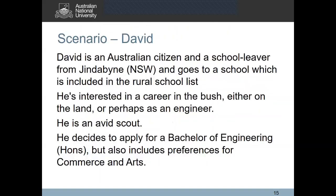Let's try and put all of this information into context by looking at a scenario of a prospective ANU student named David. David is an Australian citizen and a school leaver from Jindabyne, and goes to a school which is included in the rural schools list. He's interested in a career in the bush, either on land or perhaps as an engineer. He is an avid scout, and so he decides to apply for a Bachelor of Engineering Honours and includes preferences for Commerce and Arts in his application.